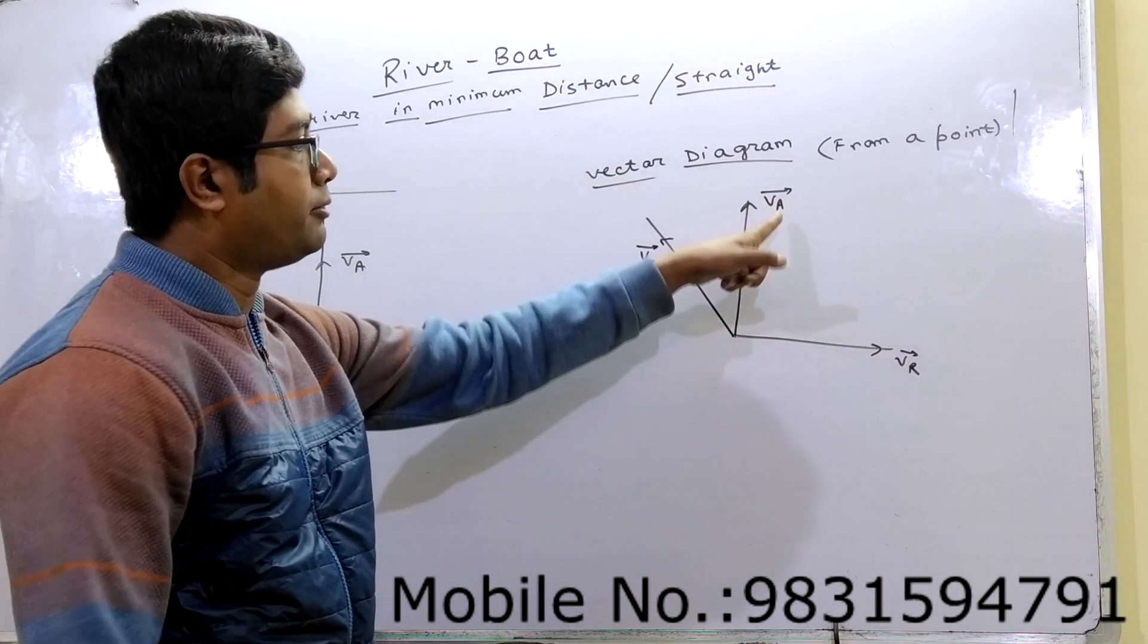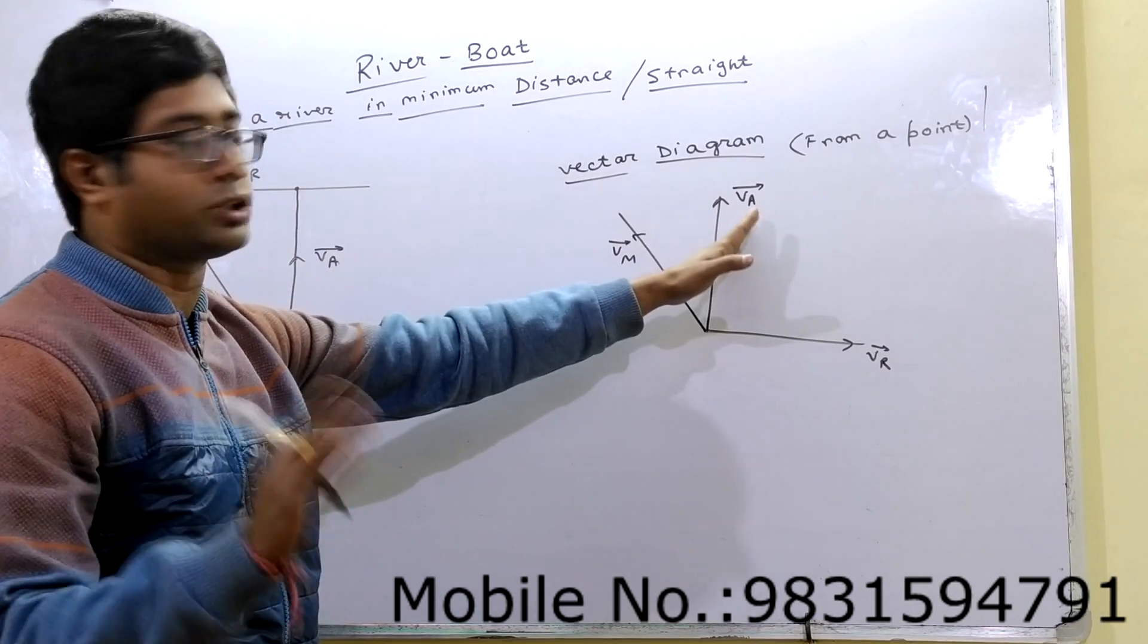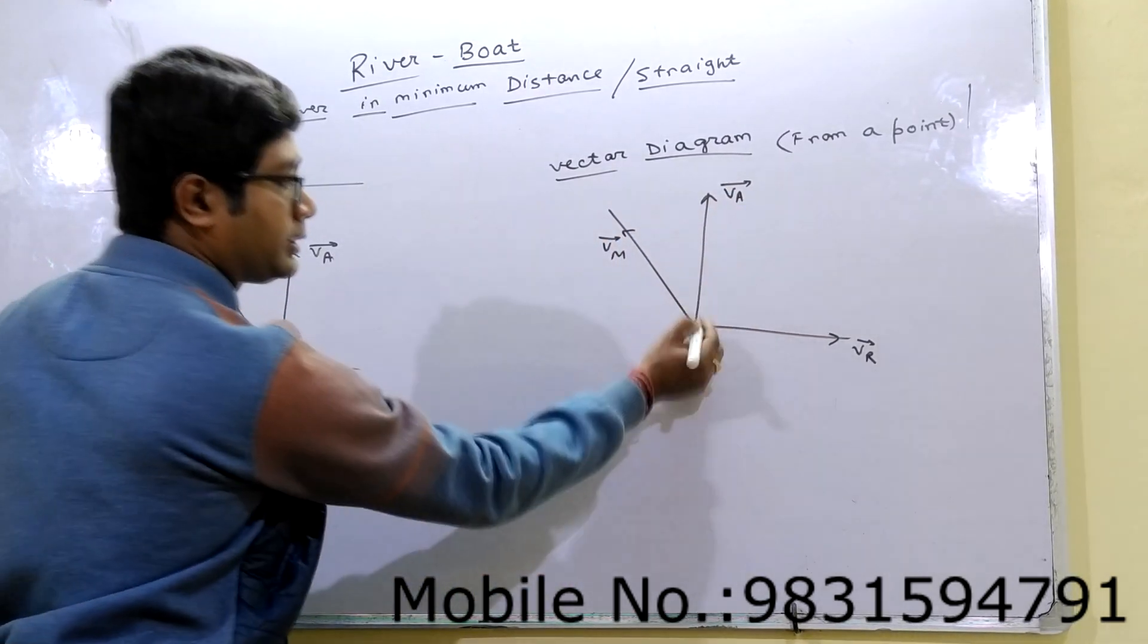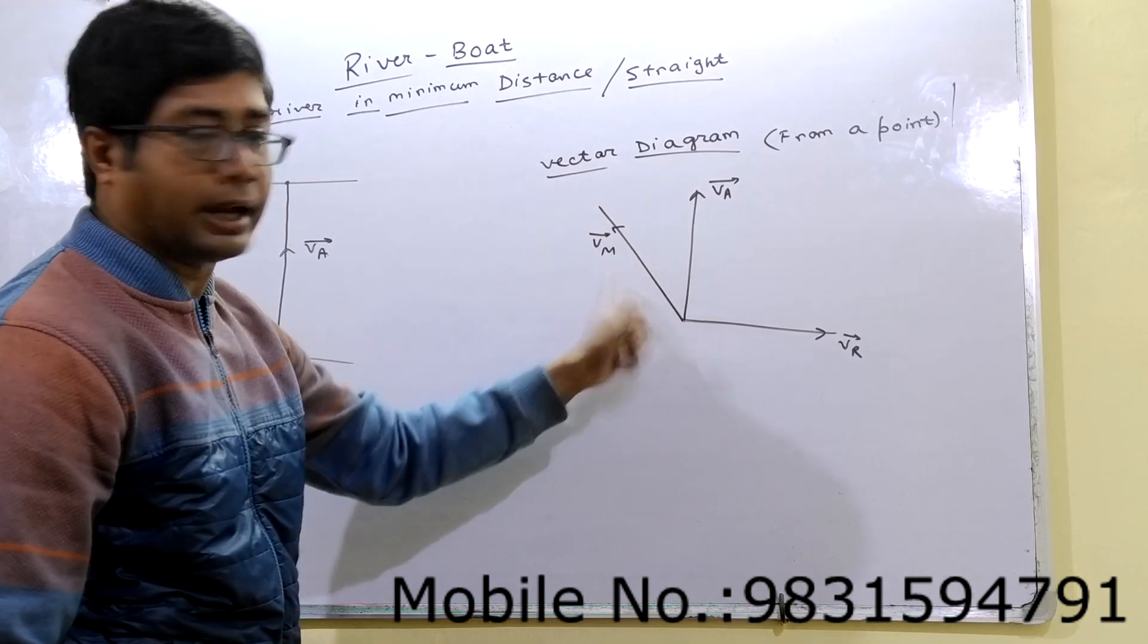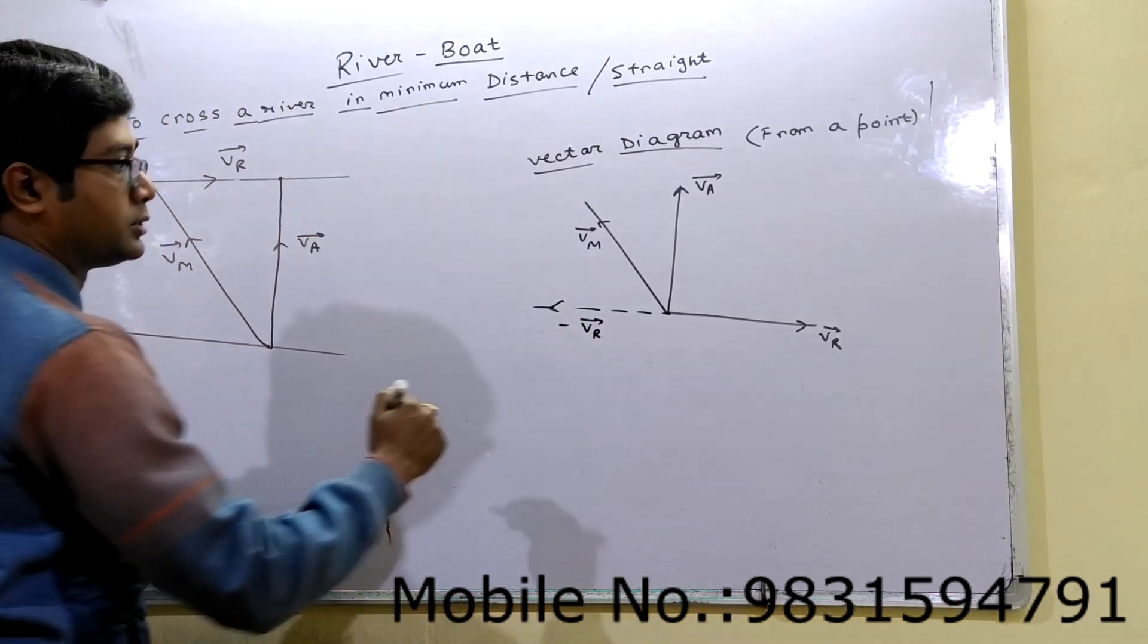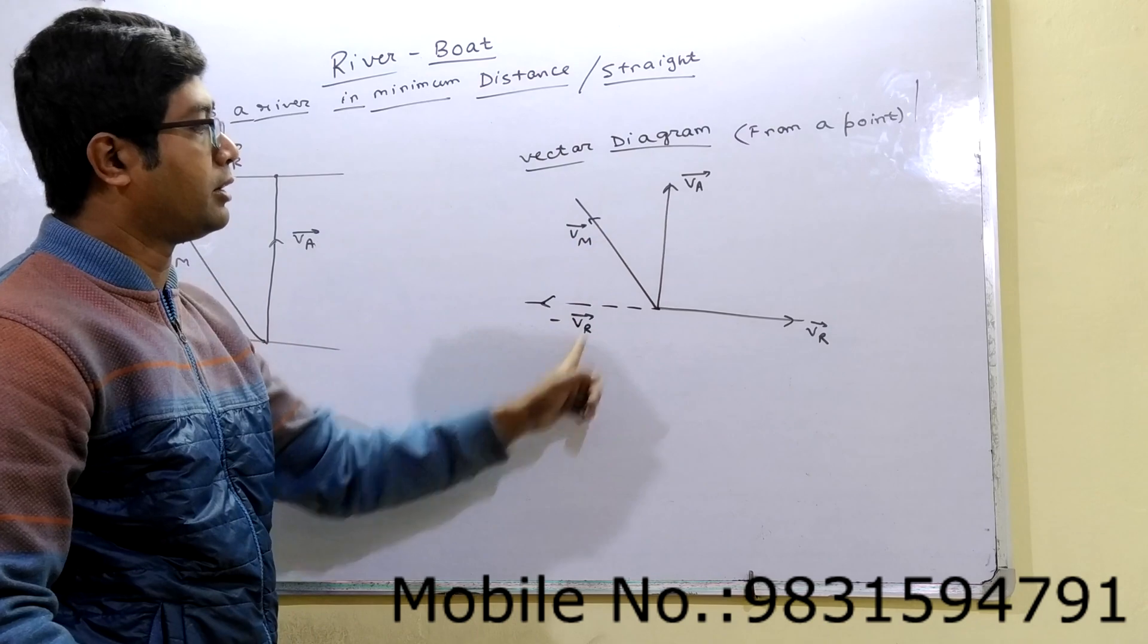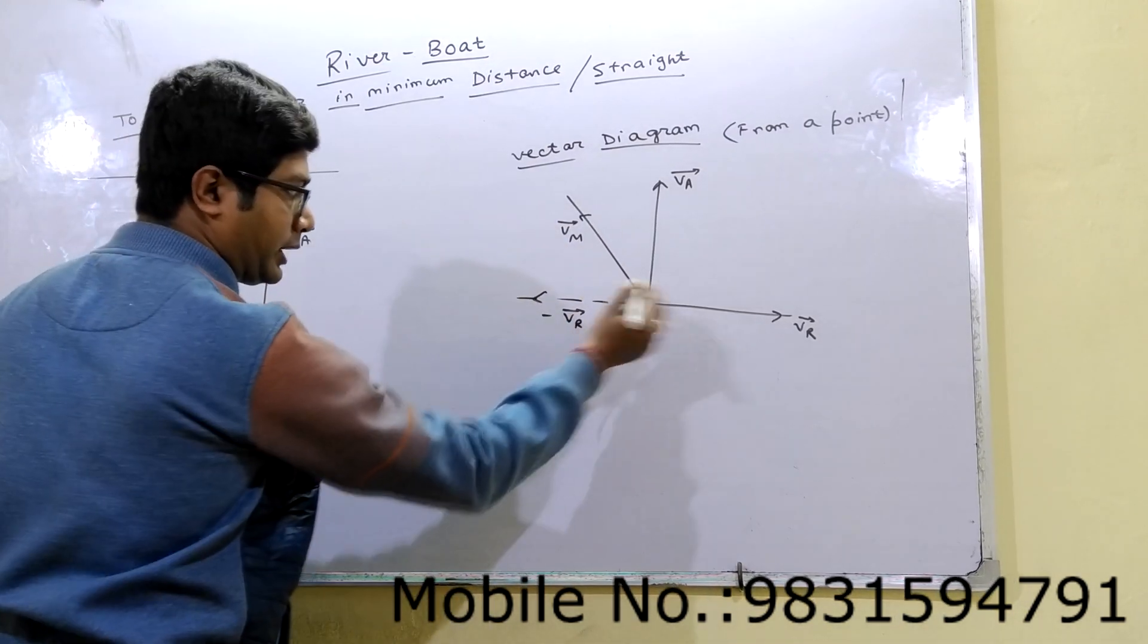According to this diagram, VA is a resultant. Why? Within the two vectors, resultant VA. But the angle between VR and VA is more than 90. So VA should be made opposite. Now this minus VR and VN is two vectors, and VA is a resultant.